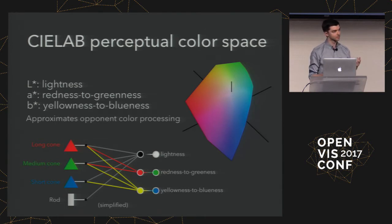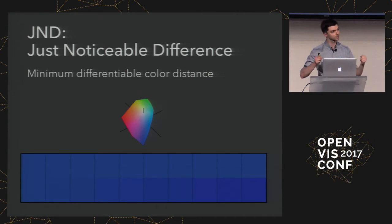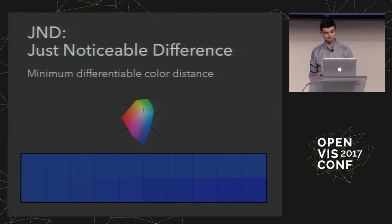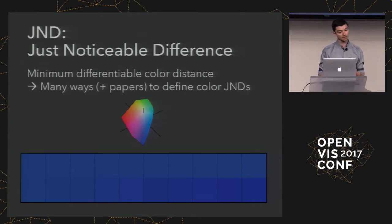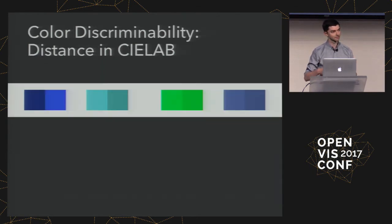When I talk about just noticeable differences, I'm really talking about minimum differentiable color distances. If we take any two colors in this perceptual color space, are they far enough to be differentiable? There are actually a lot of different ways to measure this, with many papers and perspectives on how it could work. For today's talk, I'll just be looking at one of those. We can calculate just noticeable differences in CIE lab.